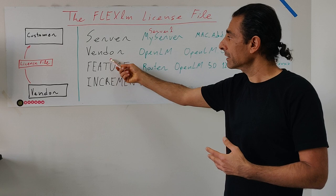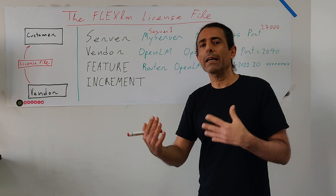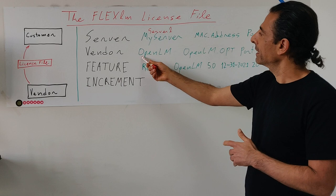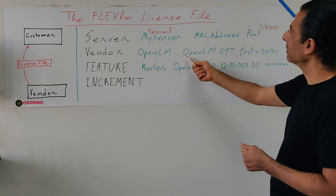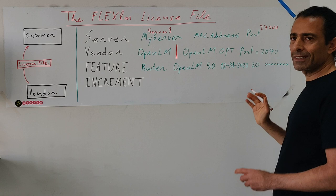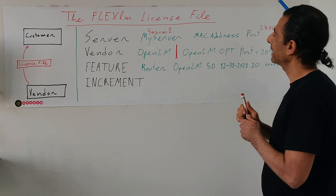Now we are looking at the second line — the vendor line. The vendor line is about the vendor that actually implemented FlexLM into their software. In this case I used 'OpenLM' as the vendor name, but you might find many different vendor names using it. Typically the line ends here, and the following items are optional.